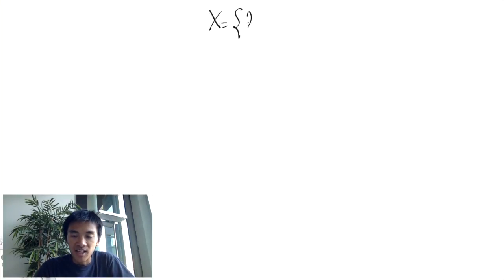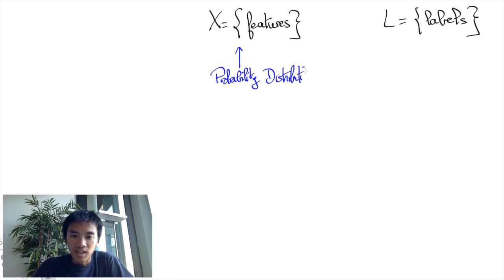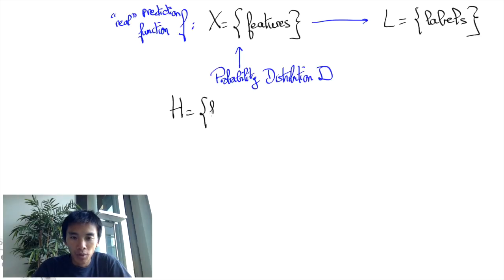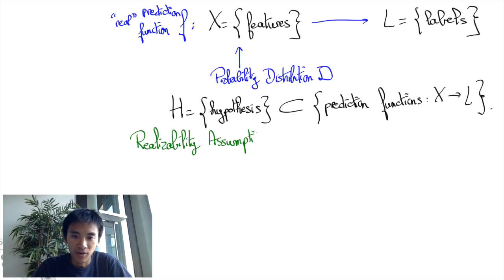We assume that there is a set X of features, a set L of labels, a probability distribution D over the set X of features, and an underlying real prediction function f from the set of features to the set of labels. We also assume that we have a whole set H of prediction functions to investigate, and that f belongs to the set H, which we shall also call the hypothesis class.